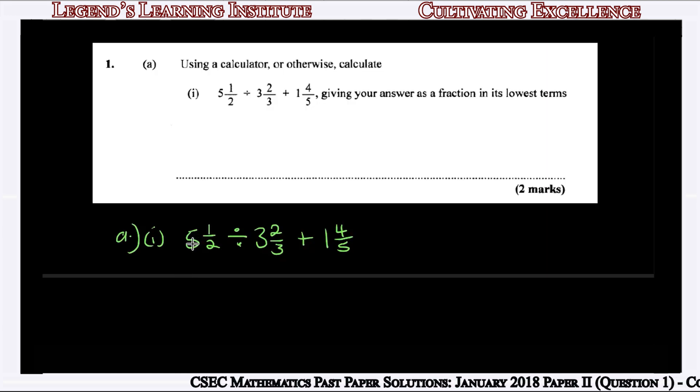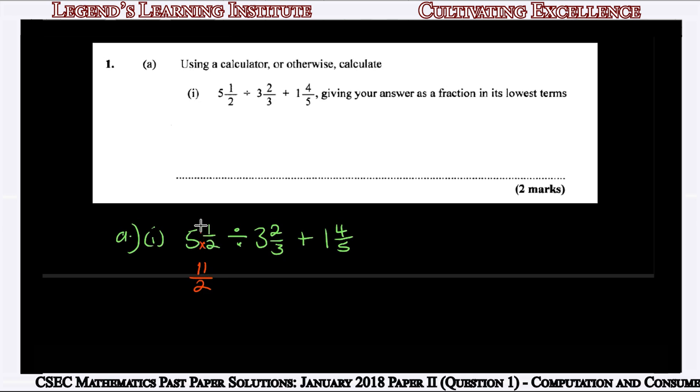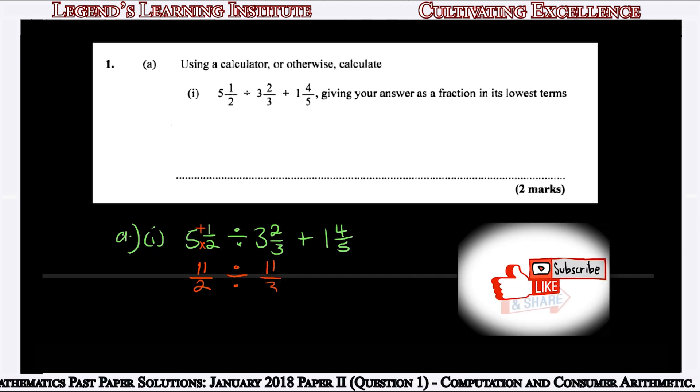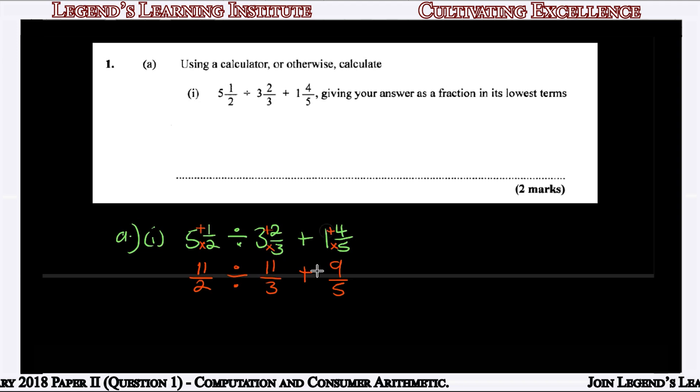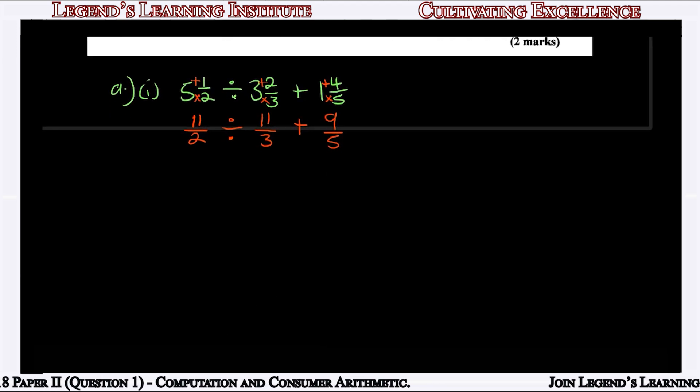Now 5½ can be rewritten as an improper fraction, which is 11/2 (2 times 5 is 10 plus 1 is 11). Then we have 3⅔, which is 11/3 (3 times 3 is 9 plus 2 is 11). And 1⅘ is 9/5 (5 times 1 is 5 plus 4 is 9). So we get 11/2 divided by 11/3 plus 9/5.